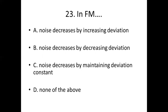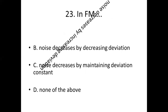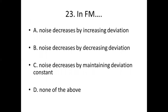23rd bit. In FM: Option A, noise decreases by increasing deviation. Option B, noise decreases by decreasing deviation. Option C, noise decreases by maintaining deviation constant. Option D, none of the above. Answer: Option A, noise decreases by increasing deviation.